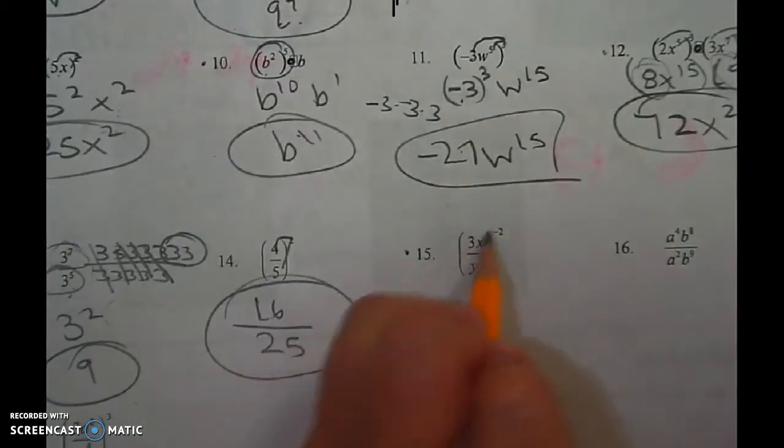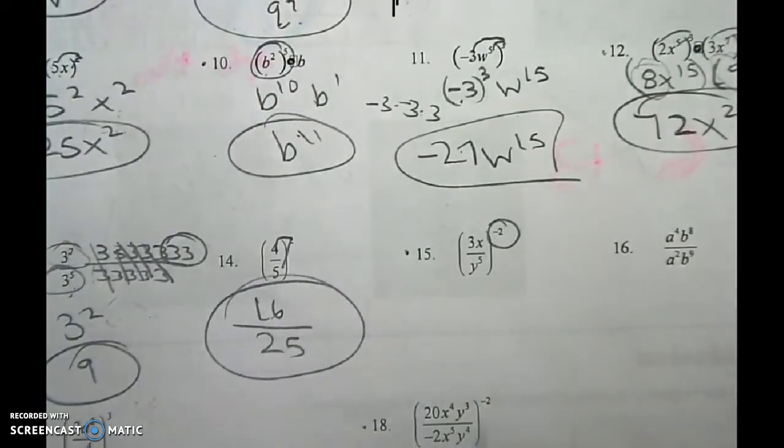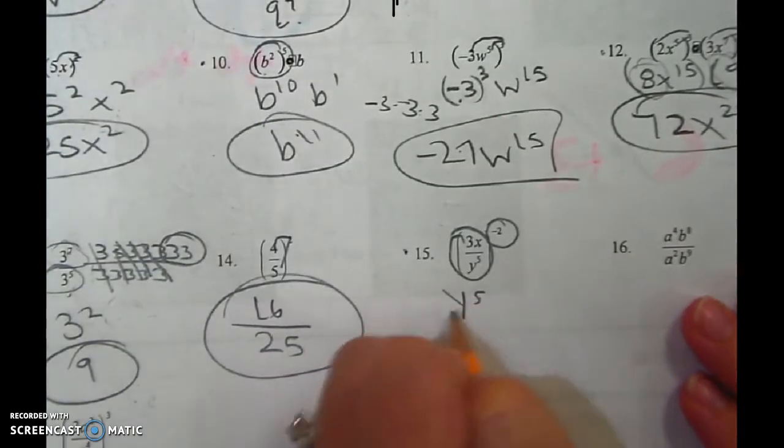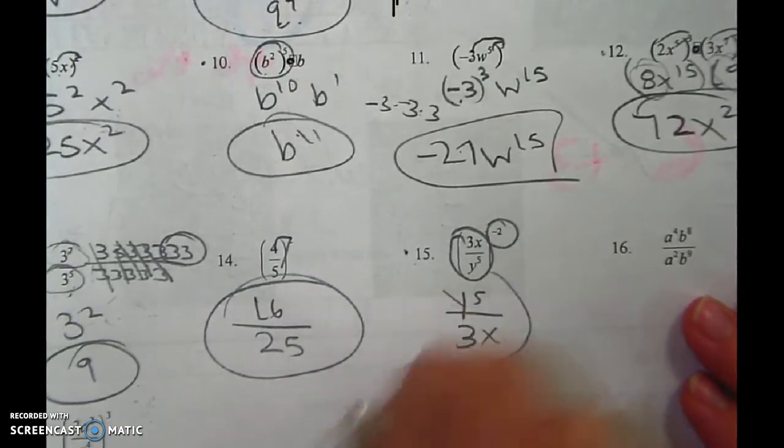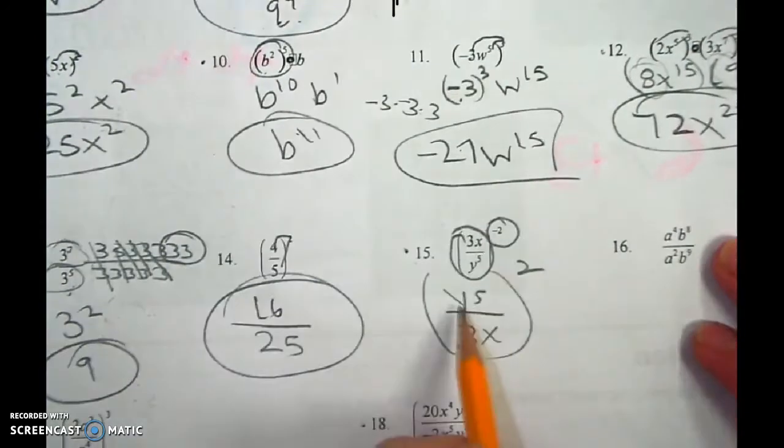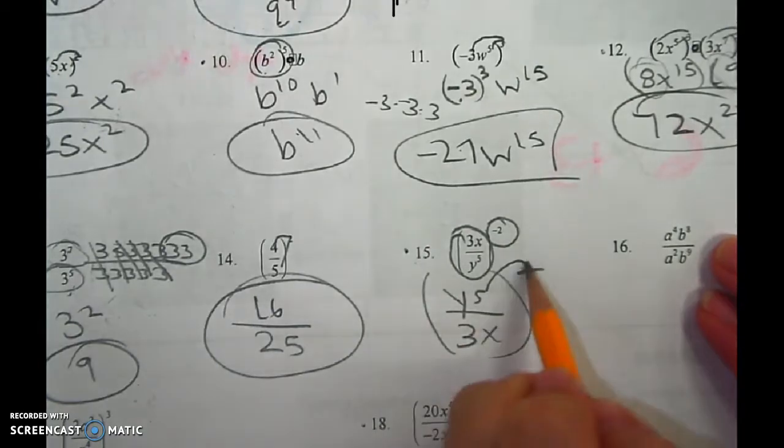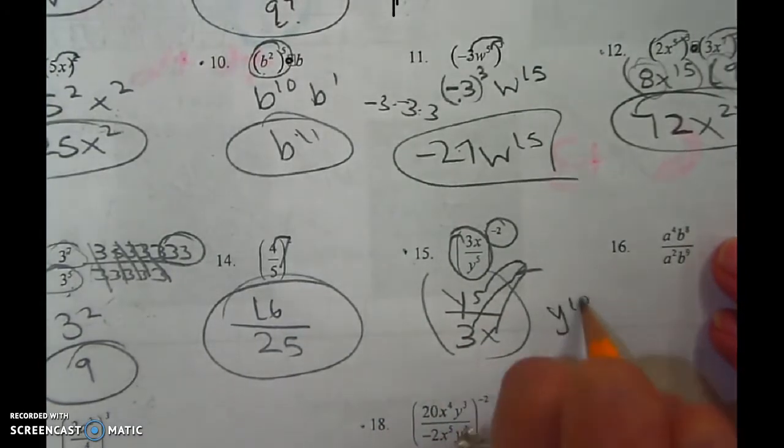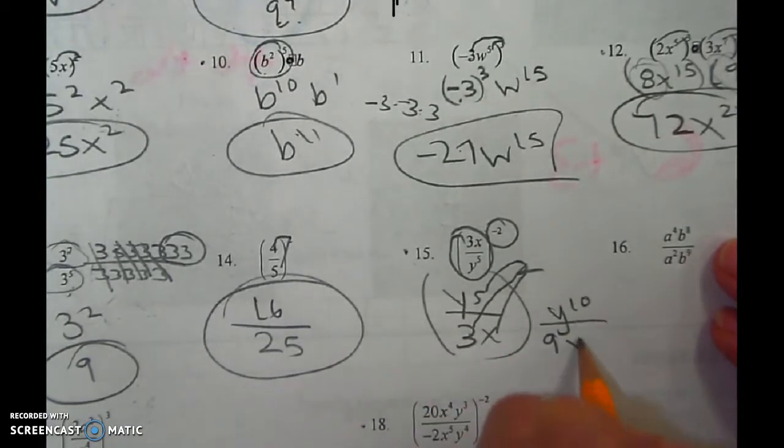Here's the problem. This whole thing is negative. Since the whole thing is negative, this whole thing's got to flip. But once it flips, then it turns positive. Now, here's one big y, but there's 2. There's a 3 and an x. So it's y to the 10th, 3 squared is 9, x squared.